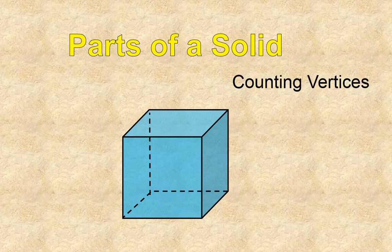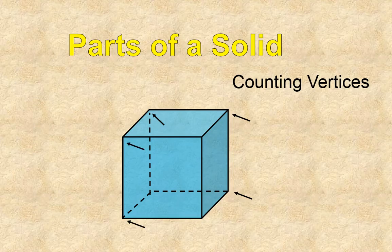So let's go ahead and count the vertices. That, by the way, vertices is the plural form of a vertex. So we're going to count the number of vertices in this solid. There's one here, another down here, three, then four, five, six, seven.